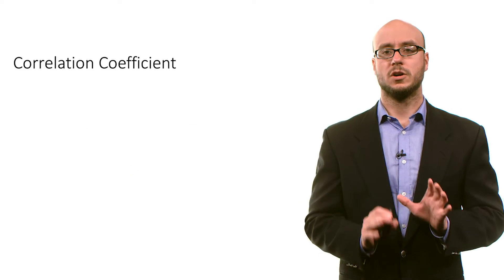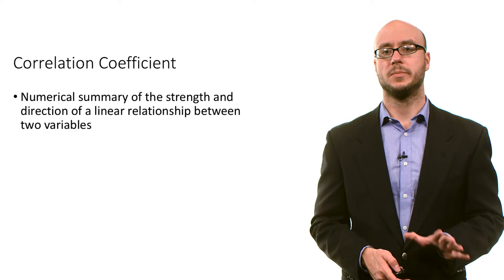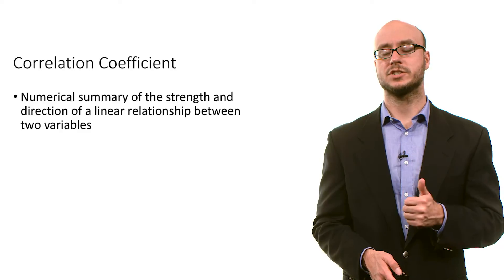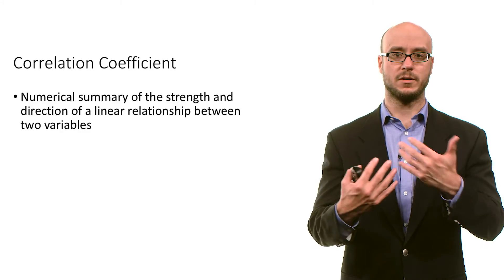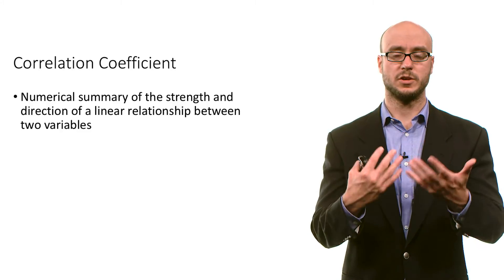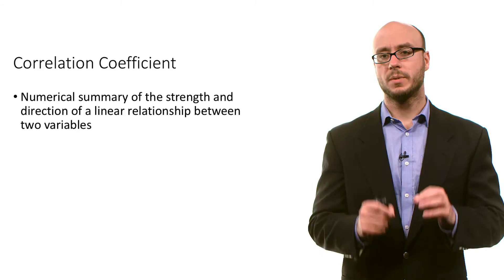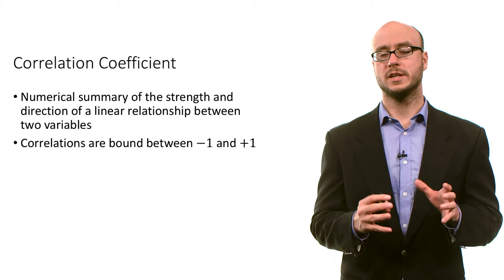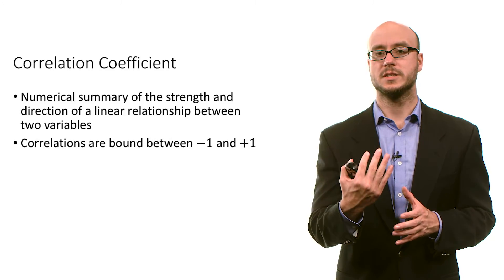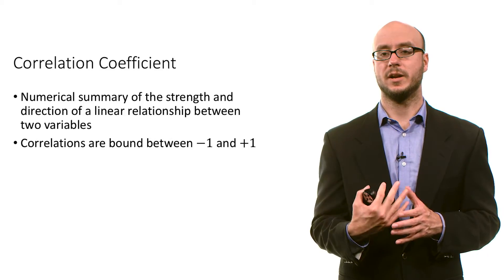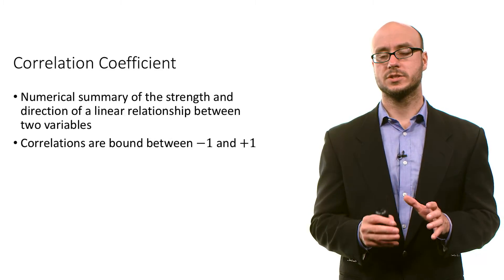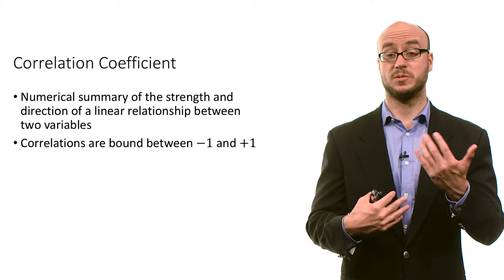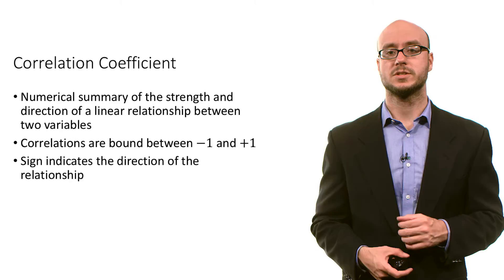The correlation coefficient has some nice properties. First of all, it gives us not only the direction or sign of a linear relationship between two variables, but it also gives us the strength or magnitude. Correlations, because they are unitless — because those units in the numerator and denominator cancel each other out — are bounded between negative one and positive one as a result of dividing by these standard deviations.